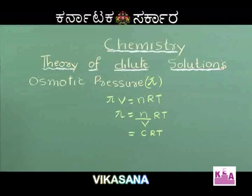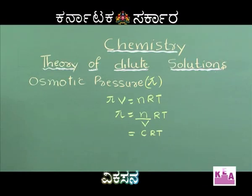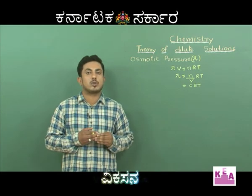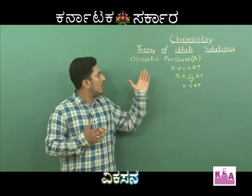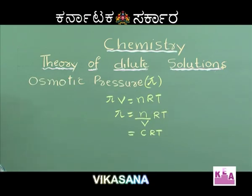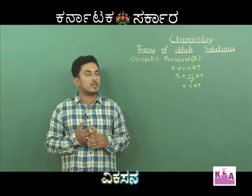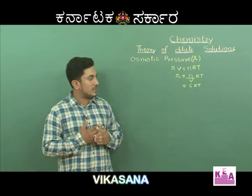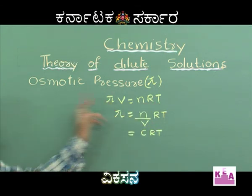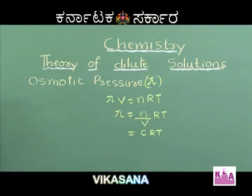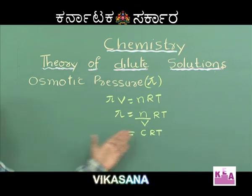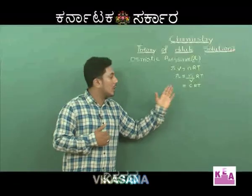Let us move to the first colligative property: osmotic pressure. Osmosis is the flow of solvent molecules from a dilute solution to a concentrated solution through a semi-permeable membrane. Osmotic pressure is the external pressure that should be applied on the solution to stop osmosis, denoted by π. Osmotic pressure is related to concentration as π·V = n·R·T, hence π = (n/V)·R·T = C·R·T, where C is concentration.